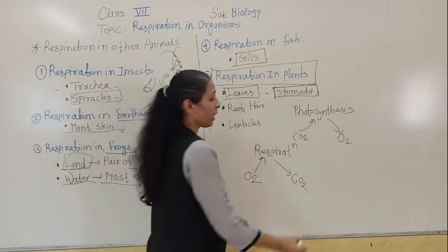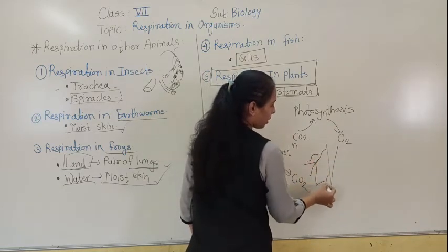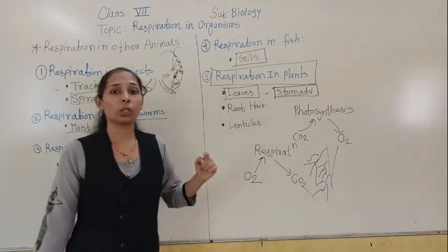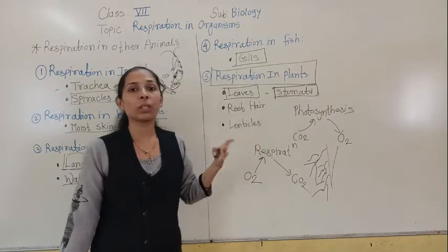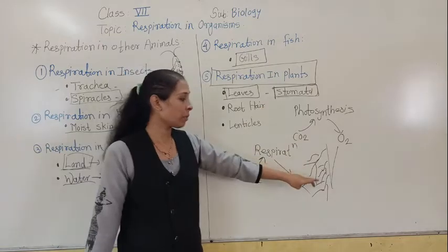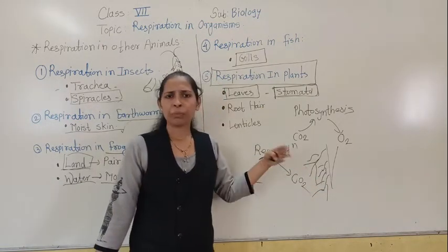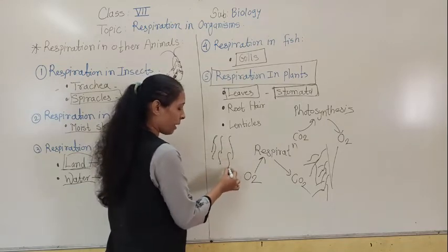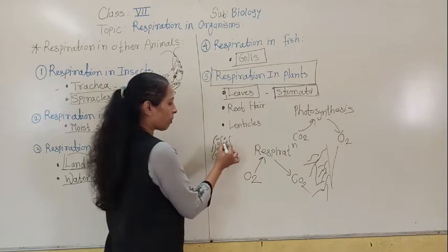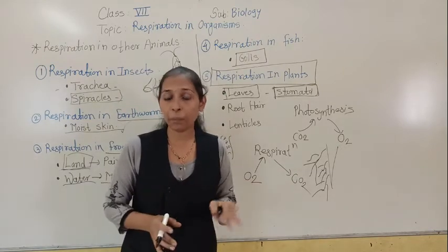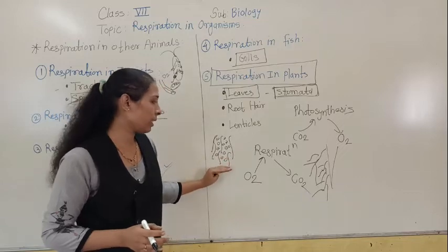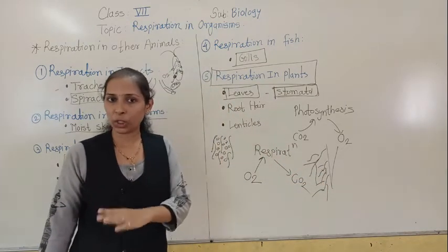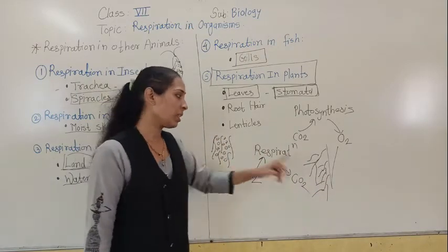As we know, there are small hair-like structures on the roots of plants called root hair. Like other parts of the plant, roots also require energy, so the roots also perform respiration through these root hair. The root hair gets air from the spaces between soil particles, which are filled with air. That air is utilized by the root hair for the process of respiration — they take in oxygen and release carbon dioxide through the root hair.